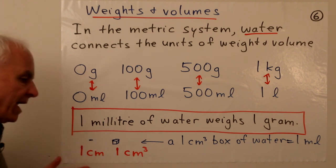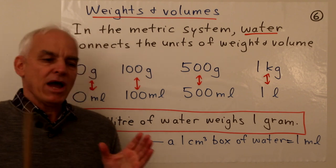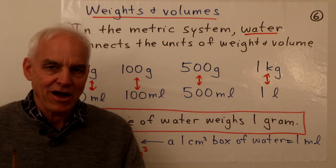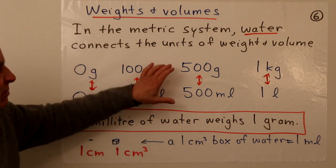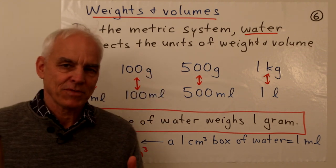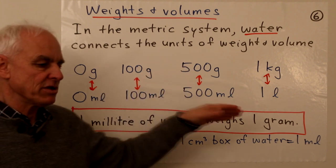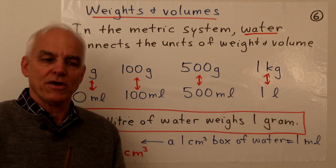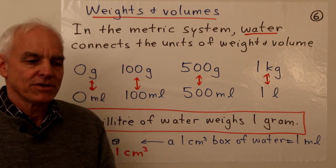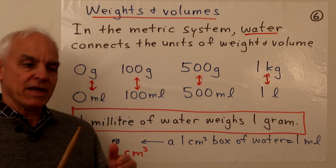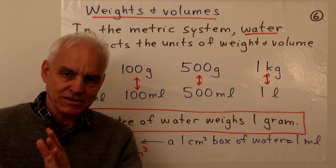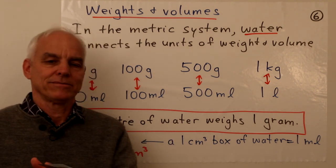If you have some other substance — not water, maybe vinegar or beef stock — the correspondence between weight and volume will be different; there'll still be a correspondence, but it's more subtle and depends on the nature of the substance. This brings us to the topic of density, which we can learn about later, once we've mastered weights and capacities.